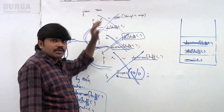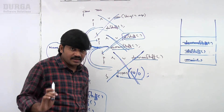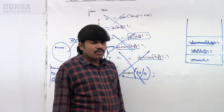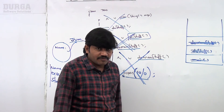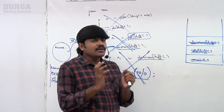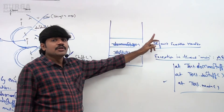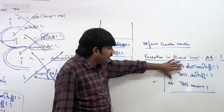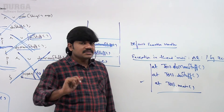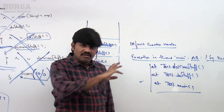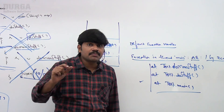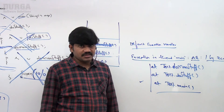This process continues until the main method. If main also does not contain handling code, JVM terminates main and removes its entry. Now no one is left to handle the exception, so JVM hands the object to the default exception handler. The default exception handler prints the exception information in the specified format and terminates the program abnormally. All three methods are terminated abnormally — it is not a graceful termination.